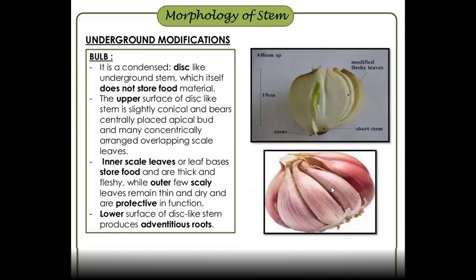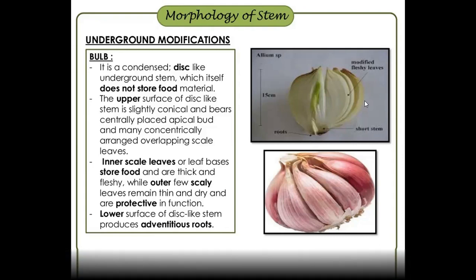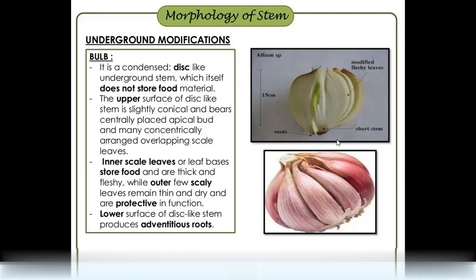Next is bulb. The best examples are garlic and onion. Garlic is an imbricate bulb, and onion is a tunicate bulb. The tunicate bulb has a nice outer layer called the tunic, which is a protective dry layer. The onion is a tunicate bulb, and the garlic is separate, in clove form — that is the imbricate bulb.